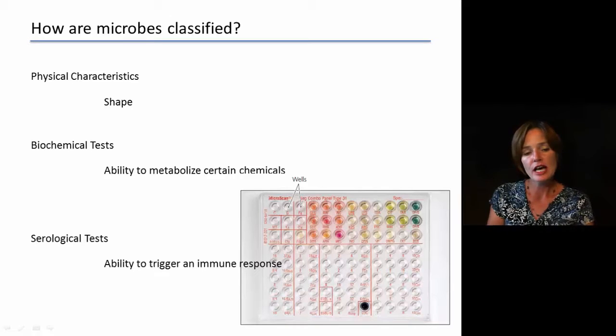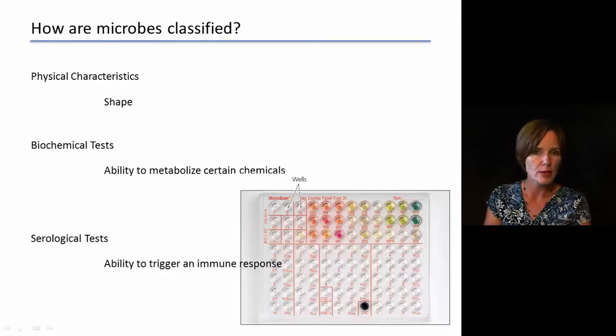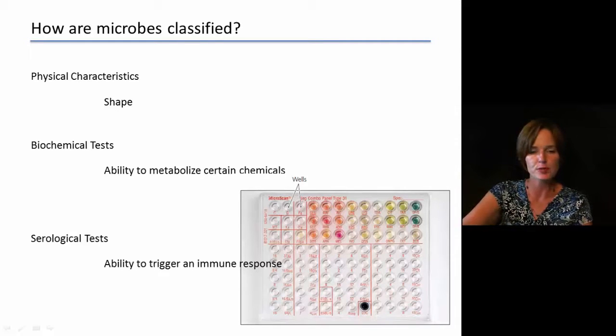Another thing we can look at is we can do serological tests. These are going to test the ability of a microbe to trigger an immune response. And based on its ability to trigger an immune response, then we would place them into different categories or groups.